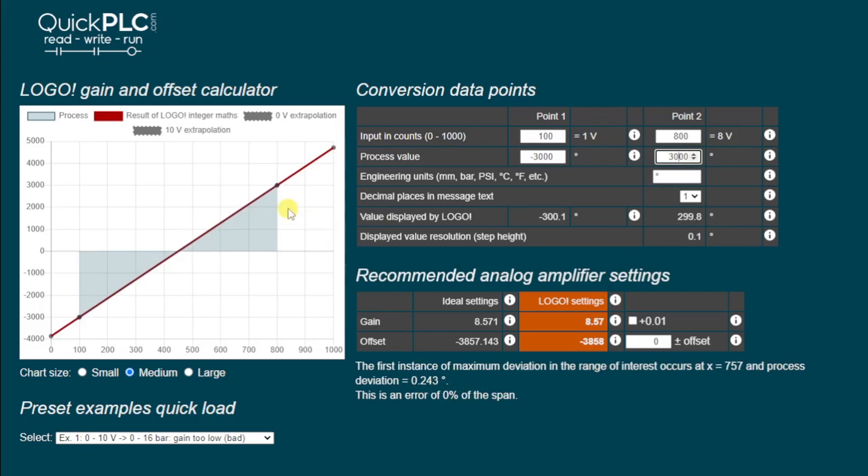Notice in this case, the gain and offset calculator has shown us the extrapolated values. If we were to run to the very end there, that we would get a reading of 4714. So that'll be 47 degrees. And if we run to this end, we get a reading of minus 3857. So that'll be minus 38.5 degrees.